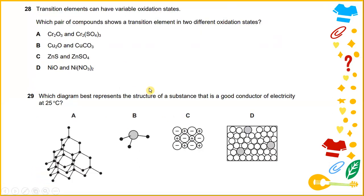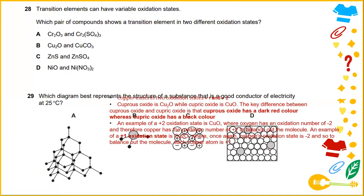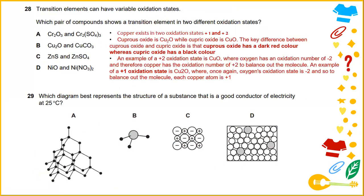Transition elements can have variable oxidation states. Which pair of compounds shows a transition element in two different oxidation states? Copper exists in two oxidation states, one and two. Cuprous oxide Cu2O and cupric oxide CuO.